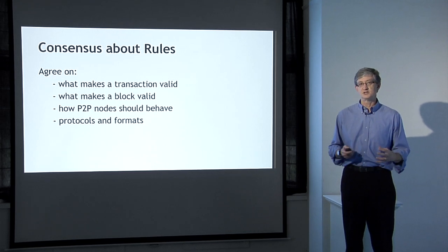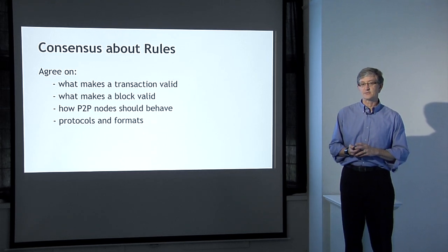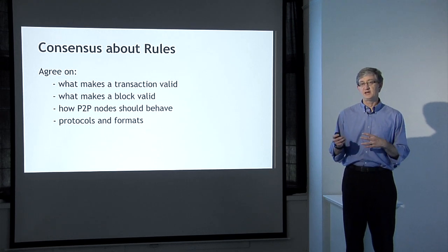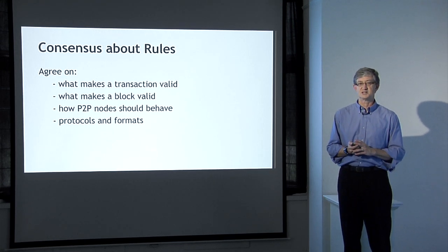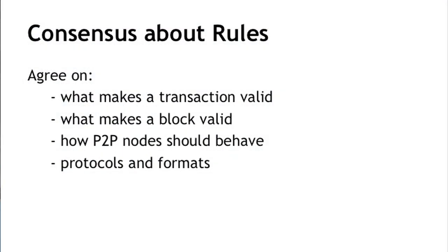Second, what makes a block in the blockchain valid — which block should be accepted and which rejected. Third, how the nodes in the P2P network should behave, how they should interact with each other, what protocol they should use, and more generally all the protocols and data formats involved in making Bitcoin work. You need consensus about these things so that all participants in the system can talk to each other and agree on what's happening.